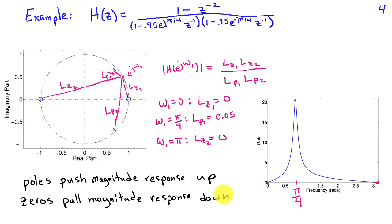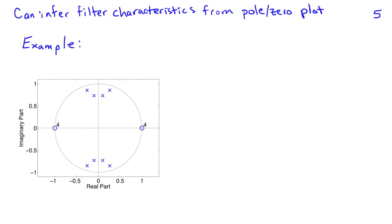Basically, what's happening is that when you have a pole near the unit circle, it pushes the magnitude response up at those frequencies, while zeros near the unit circle pull the magnitude response down. And if the zero is on the unit circle, it forces the magnitude response to be exactly zero. This kind of insight can help us understand the characteristics of filters from their pole-zero plots, and we can also use these ideas to design filters — for instance, if I want a filter that attenuates a certain frequency, I need to put a zero on the unit circle at that frequency.